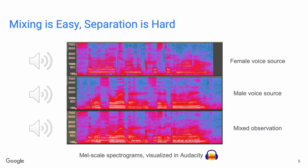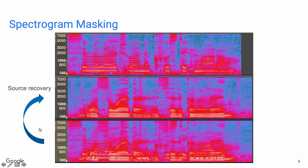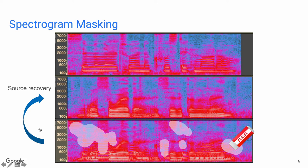Let's look at an example. Here are three spectrograms: the first is a female voice, the second is a male voice, and the last is a mixed one. If we want to recover the male voice from the mixed one, intuitively we can use an eraser on the spectrogram to remove the harmonics of the female voice. In practice, this is doable, and we call that spectrogram masking.